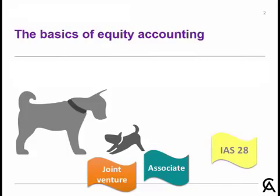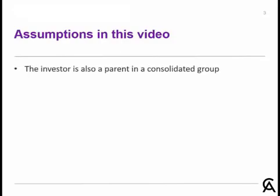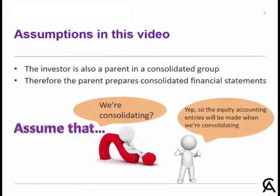Under this method of accounting, we're accounting for our share of the joint venture or the associate. Some assumptions in this video: firstly, let's assume that the investor is also a parent in a consolidated group, so they're already preparing consolidated financial statements because they own a number of subsidiaries. Plus, they also have an investment in an associate applying the equity method, or it's an investment in a joint venture, which also means the equity method.